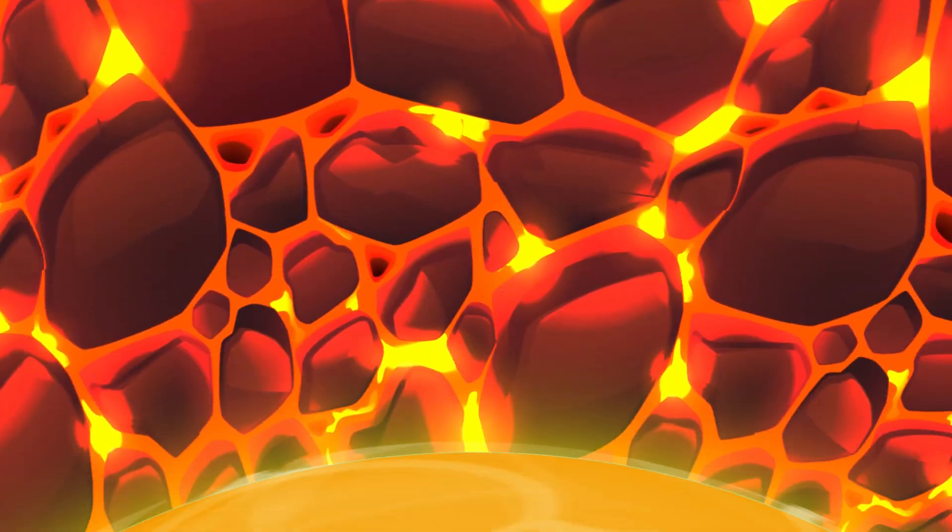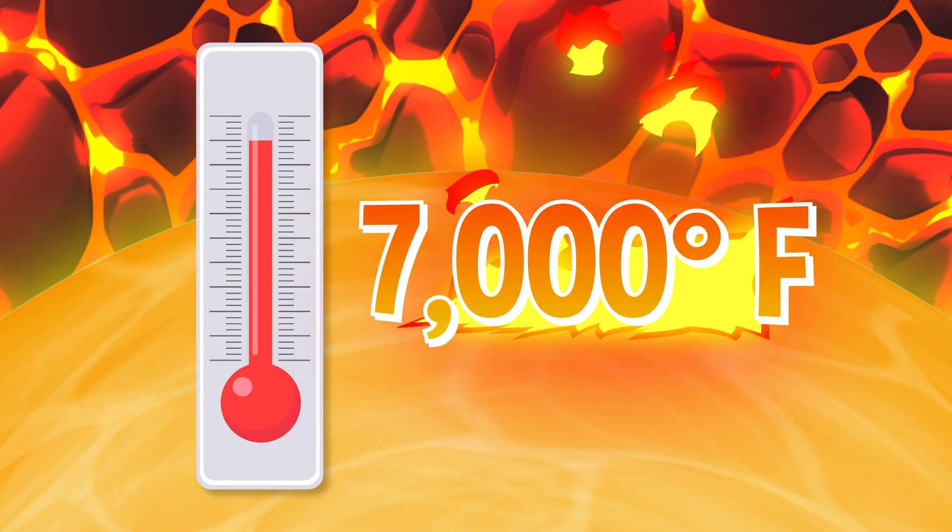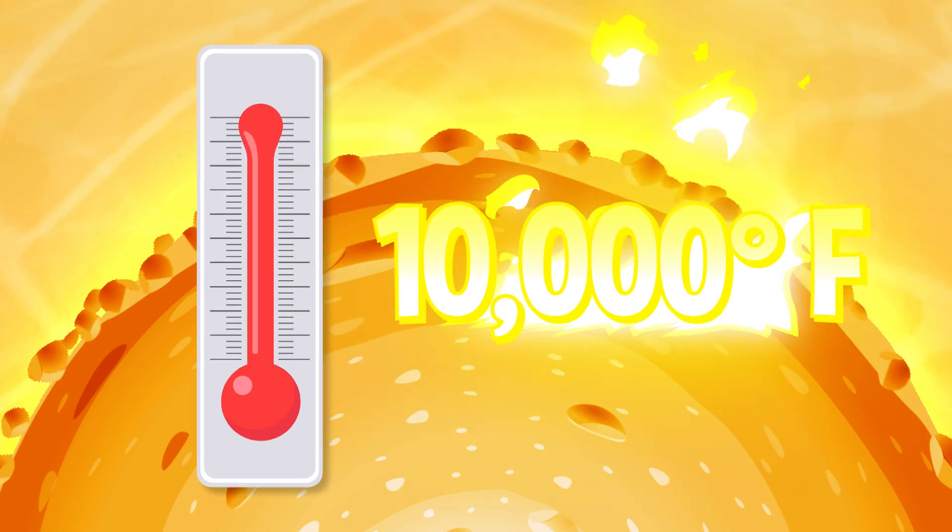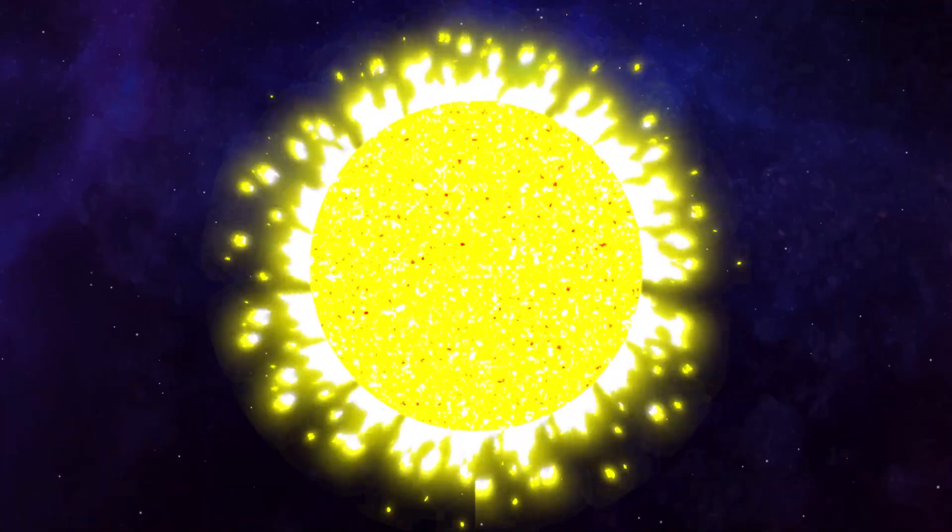The edge of the outer core is about 7,000 degrees Fahrenheit, and the inner core is even hotter, over 10,000 degrees Fahrenheit. That's about as hot as the surface of the sun.